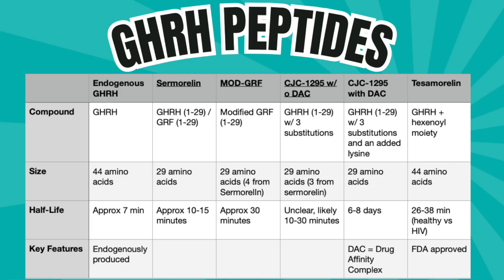Looking at the chart: endogenous growth hormone-releasing hormone is 44 amino acids and has an endogenous circulating half-life of approximately 7 minutes. Sermorelin is GHRH(1-29), also known as GRF(1-29), and as is pretty obvious it consists of 29 amino acids — the first 29 of the structure of endogenously produced GHRH. It has a half-life that's short but longer than endogenously produced GRF, approximately 10 to 15 minutes.